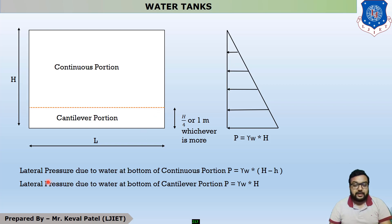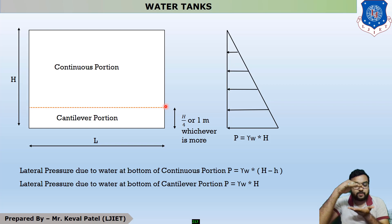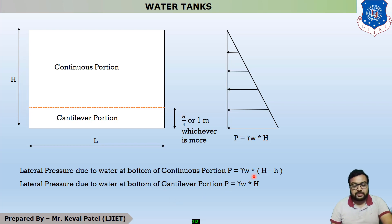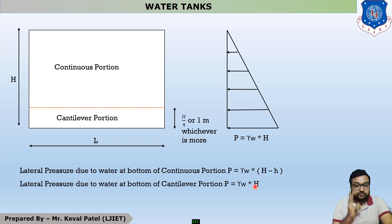The lateral pressure due to water at the bottom of the continuous portion: since the total height is H and the cantilever height is small h, the height of the continuous portion is (H − h). So the pressure at the bottom of the continuous portion is gamma_w × (H − h). The maximum pressure at the bottom of the cantilever portion is gamma_w × H. These two equations are very important when designing a rectangular water tank.